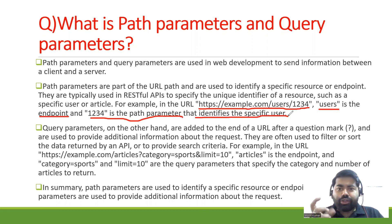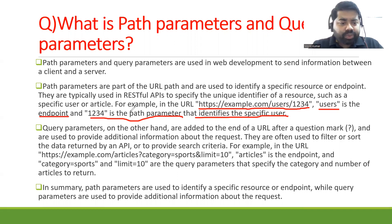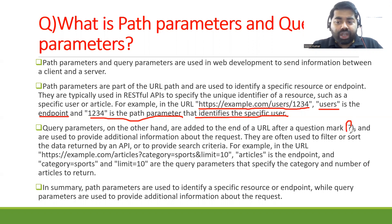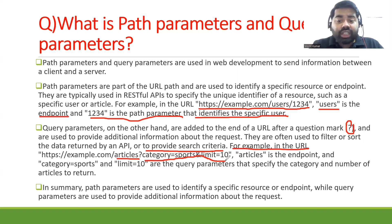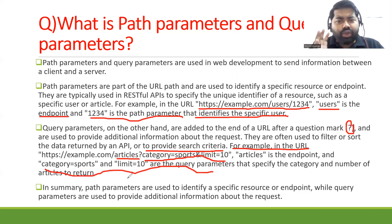I'll show you some examples in Postman and then we can automate the same with REST Assured. Now, what is a query parameter? Query parameters are added to the end of the URI after a question mark. They are used to provide additional information about the request and are often used to filter or sort data or provide search criteria. For example, '/articles?category=tech&limit=10' — here 'articles' is the endpoint and the query parameters specify the category and number of articles.